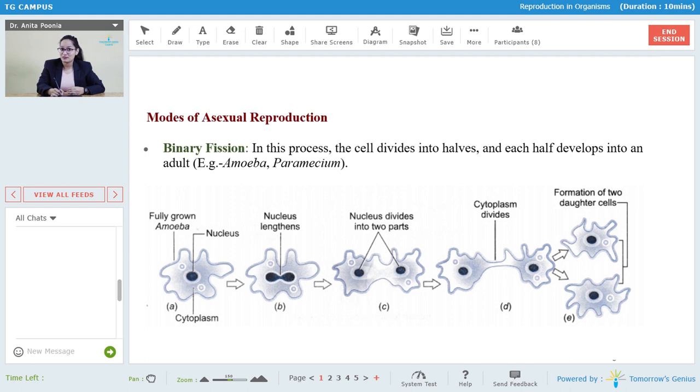and eventually a single cell of amoeba divides into two daughter cells. So what is exactly happening in binary fission? In this process the cells divide into halves and each half then develop into an adult. Another example for binary fission is paramecium.